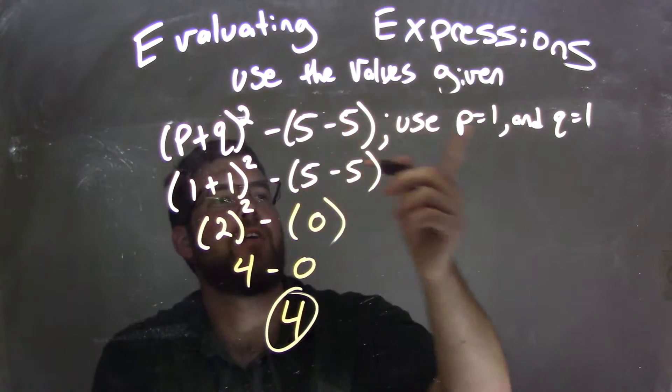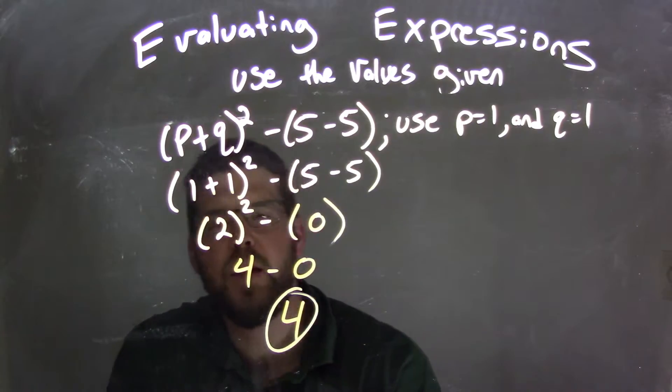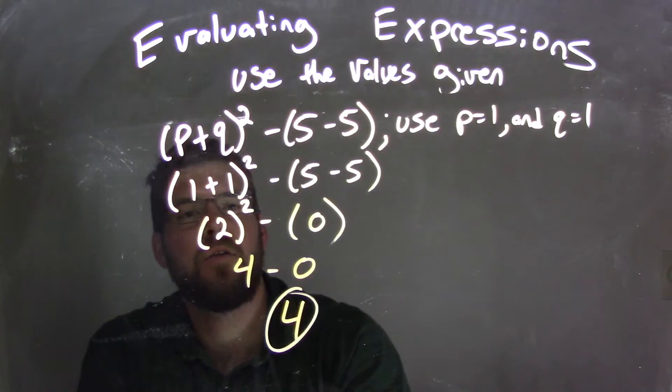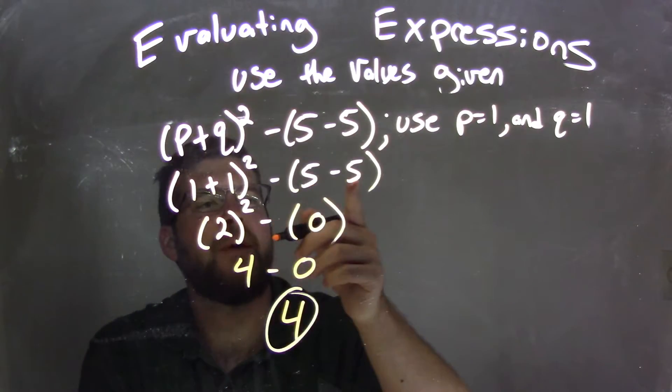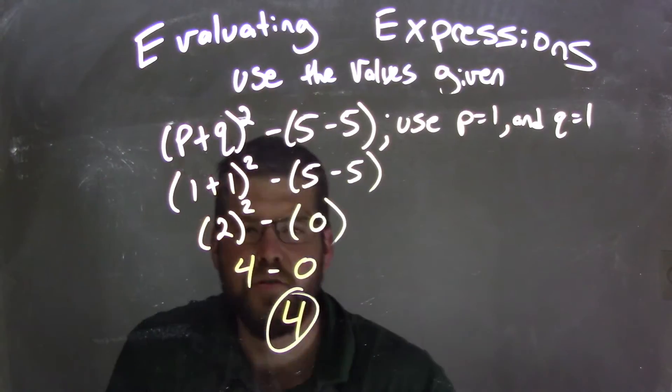p equals 1 and q is 1. We substitute them in for p and q. I did not put the parentheses around this time. I thought I might clutter it. 1 plus 1 is 2. 2 squared is our next step, became 4. And then 5 minus 5 in the parentheses here became 0, and 4 minus 0 is 4. Thank you.